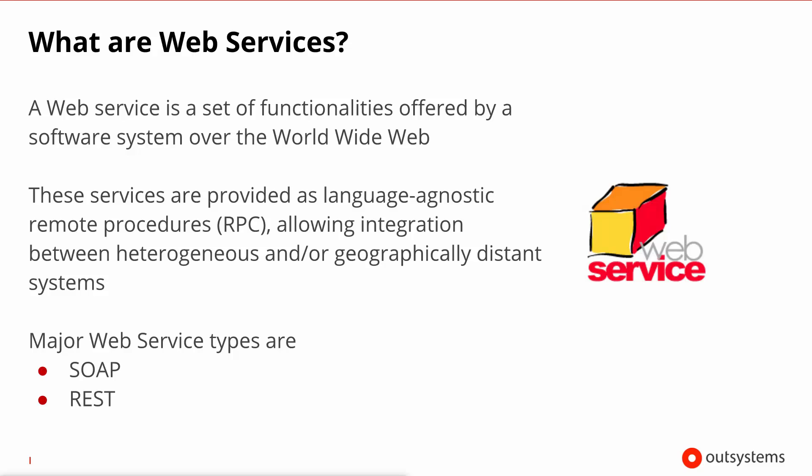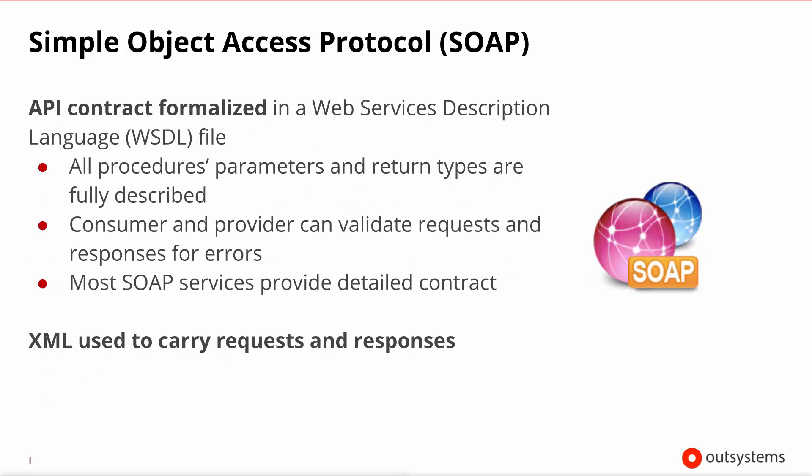There are two kinds of flavors to web services: SOAP and REST, both of which are supported in the OutSystems platform. SOAP stands for Simple Object Access Protocol, and the main characteristic of SOAP web services is that they formalize the API they provide in a Web Services Description Language file, also known as WSDL. In this contract file, all of the service's methods and parameter types are described, allowing a consumer to import it to generate the calling interface on its own side, as well as to validate all communications during runtime.